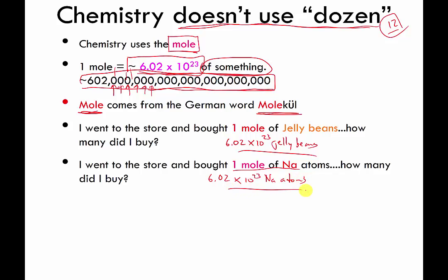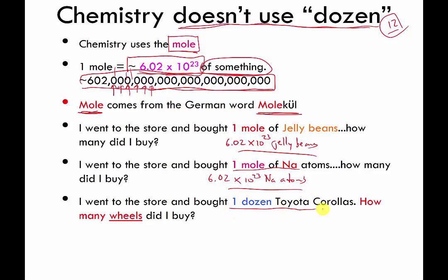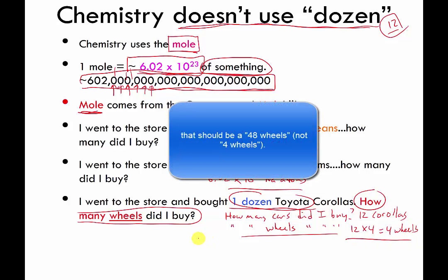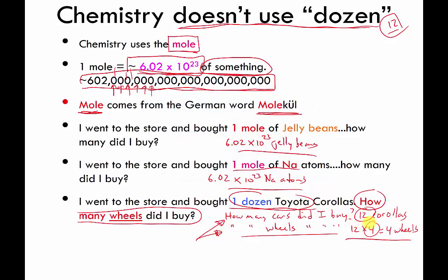I went to the store and bought a dozen Toyota Corollas. Two questions: how many cars did I buy, and how many wheels did I buy? I bought 12 cars. How many wheels? Assuming no spare, it's 12 times 4 — that's 48 wheels. This might not seem difficult because 12 and 4 are reasonable numbers to wrap your head around, but this type of question is going to show up with moles, so I'm trying to get you in the right frame of mind.